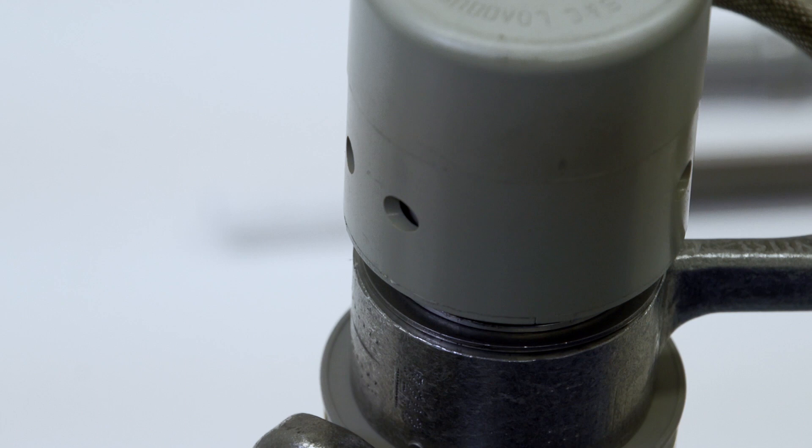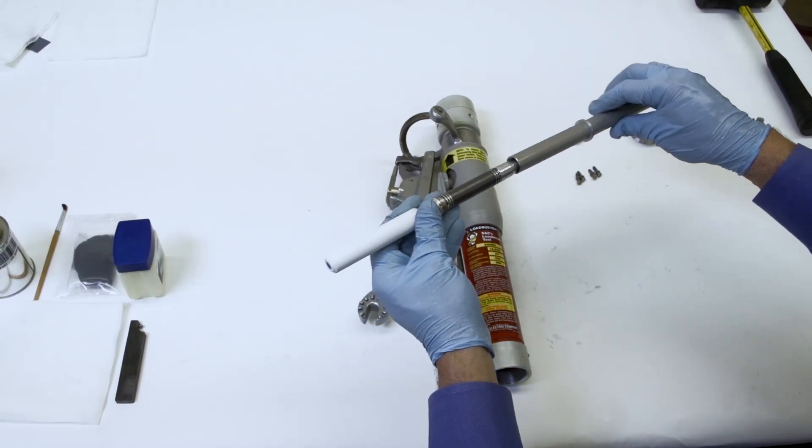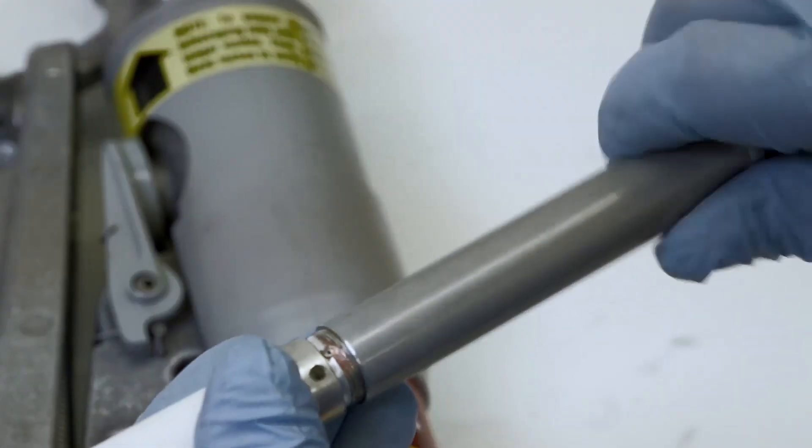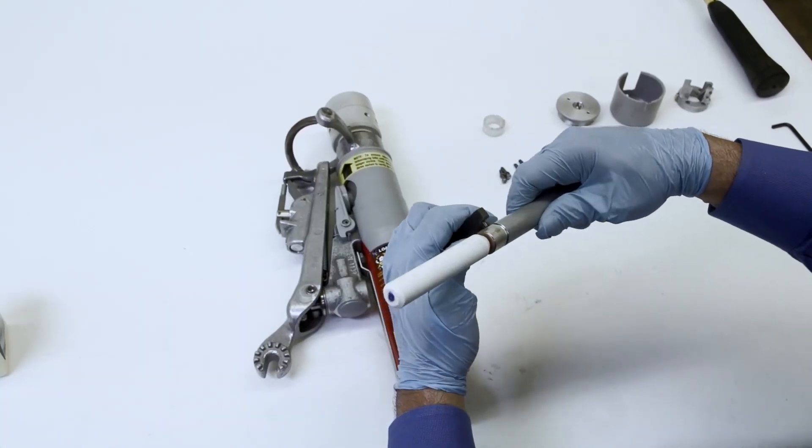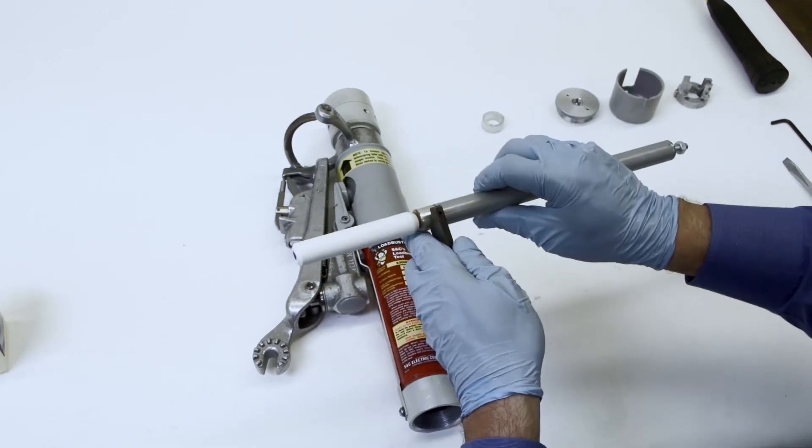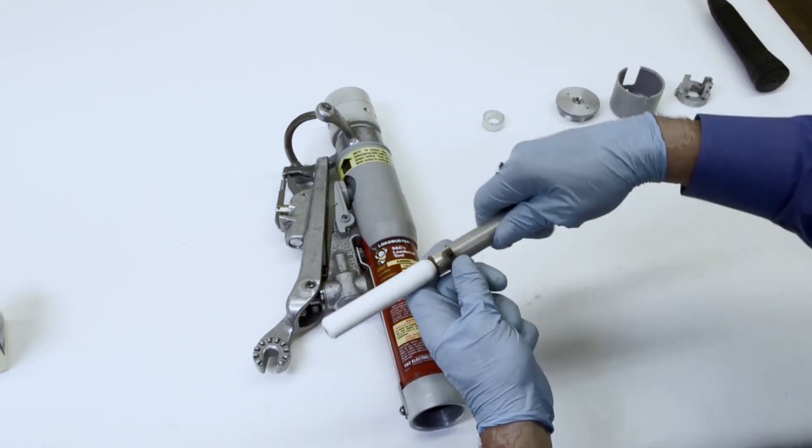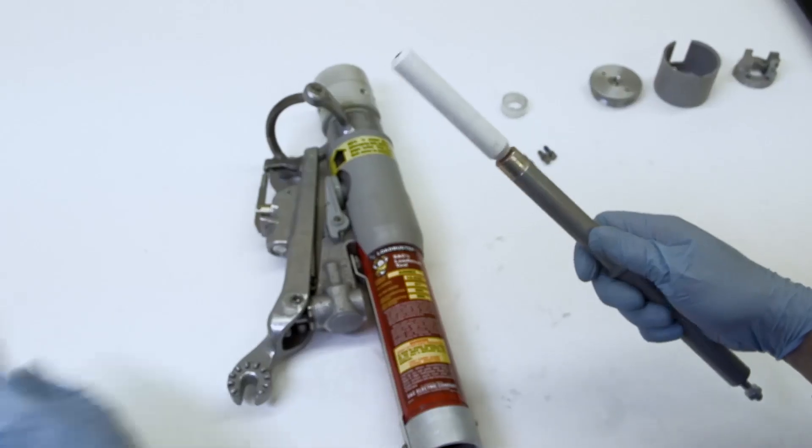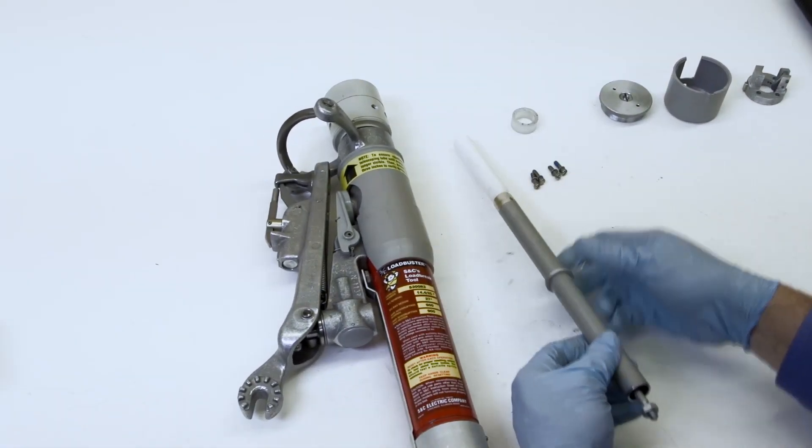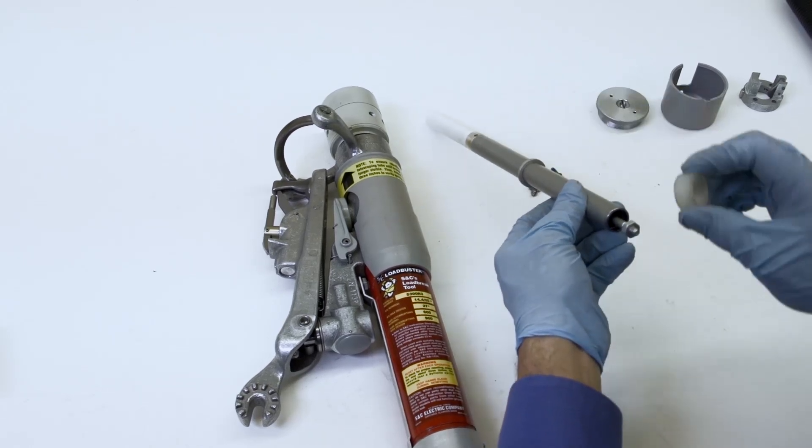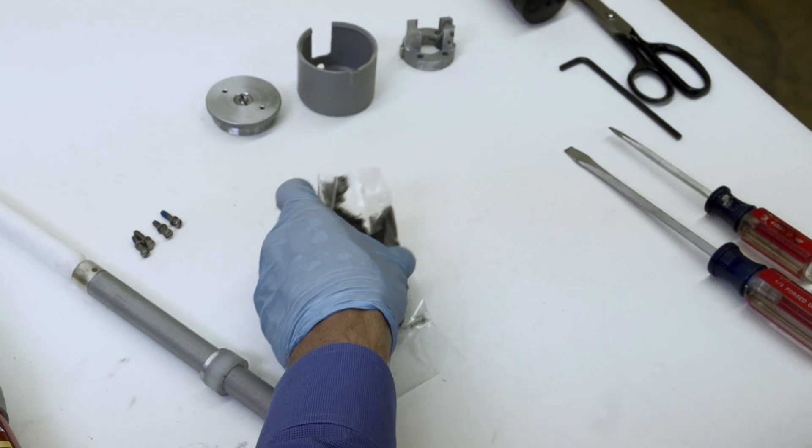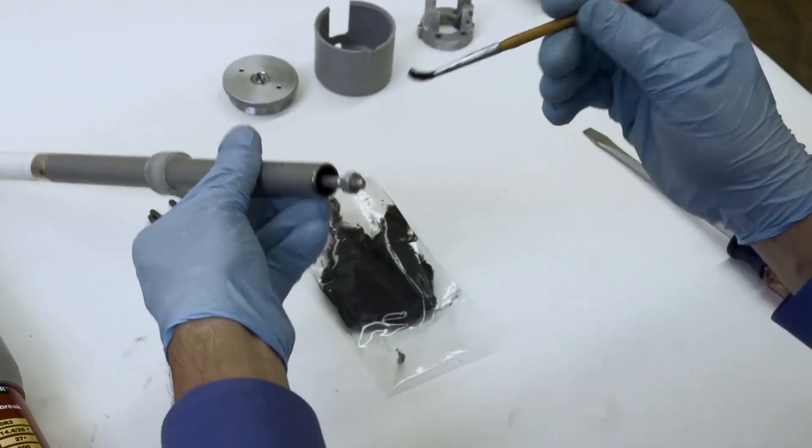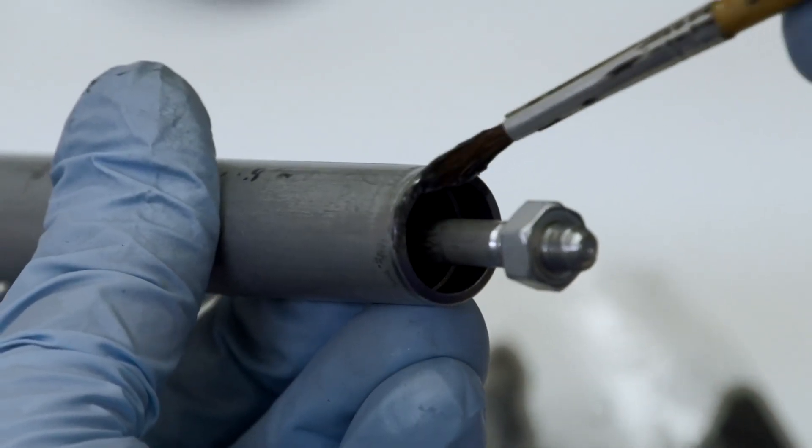Next, screw the contact tube onto the moving contact assembly. Use the S&C spanner wrench to hold the assembly steady while tightening the threads. Then slide the guide bearing over the open end of the contact tube.